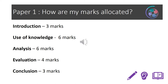To maximise marks for your essays, it's important to understand how marks are allocated. For your introduction, there are 3 marks available. For your use of knowledge, there are 6 marks. For analysis — both basic and developed — there are 6 marks. For evaluation, there are 4 marks. And for your conclusion, there are 3 marks, making 22 marks in total.